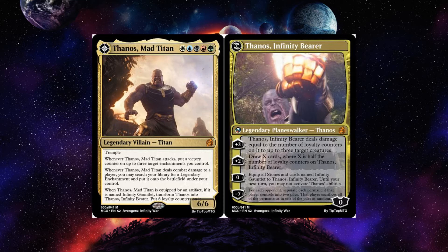He has a plus two: draw X cards where X is half the number of loyalty counters on Thanos Infinity Bearer. If you flip him and immediately plus two, he'll be at eight loyalty counters and you'll draw four cards. He has a zero: equip all stones and cards named Infinity Gauntlet to Thanos Infinity Bearer, but until your next turn you may not activate Thanos's abilities. He has a minus seven: for each opponent, separate each permanent that player controls into two piles; that player sacrifices all permanents in one pile at random — designed to feel like the snap.